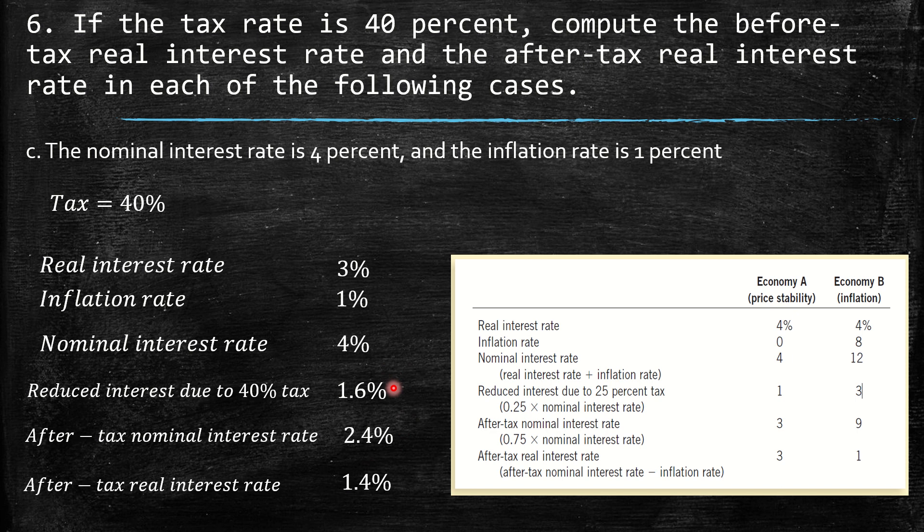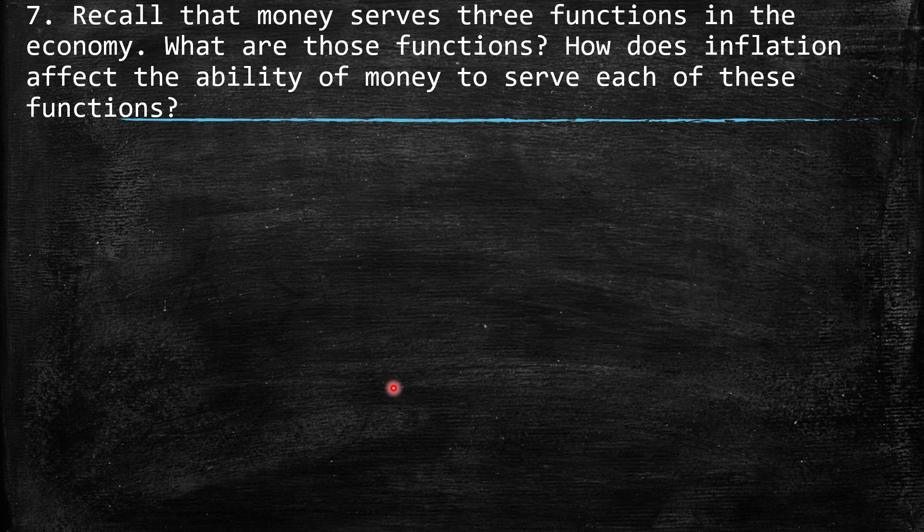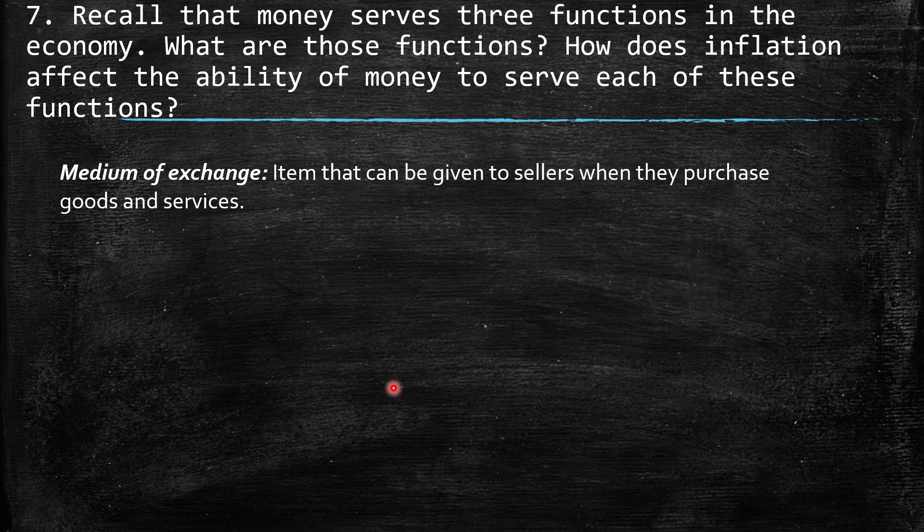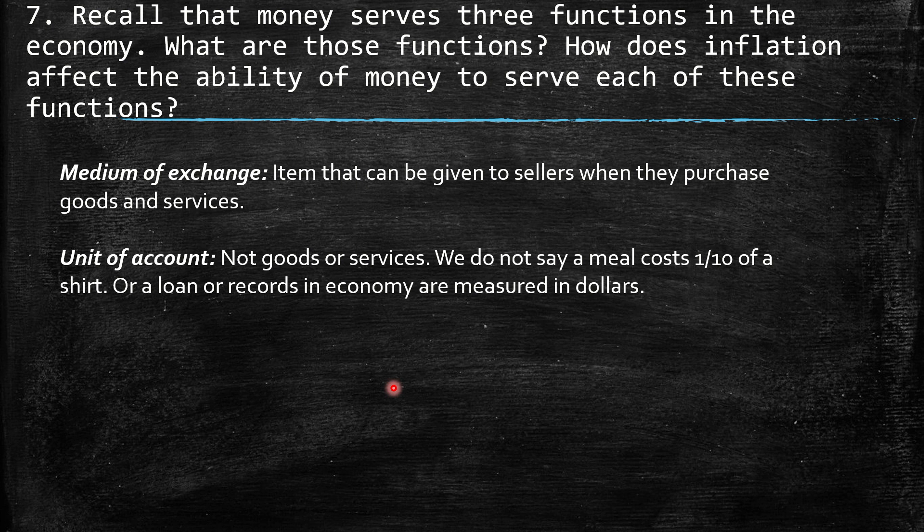Question 7: Recall that money serves three functions in the economy. What are those functions, and how does inflation affect the ability of money to serve each? The first function is medium of exchange — you provide money and in return get goods and services. Second, unit of account: instead of saying a bottle of water equals half a beer, you say the bottle is $1 and the beer is $2. Third, store of value — money can transfer purchasing power from the present to the future.